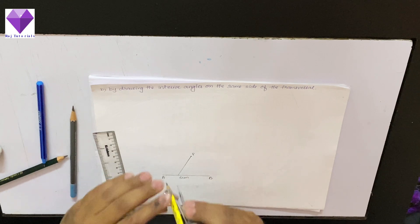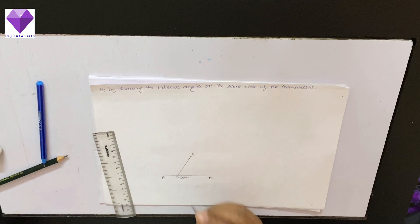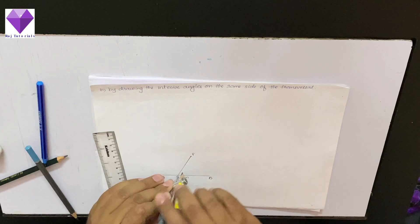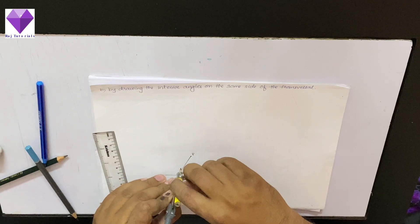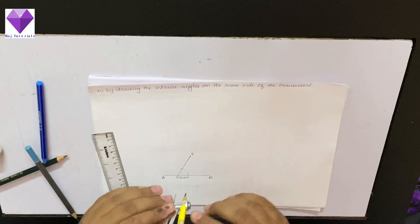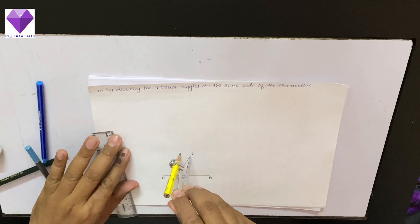See, with this S point S center, I am drawing again an arc of any radius. Now, with P, S center and radius same, I am drawing this arc.